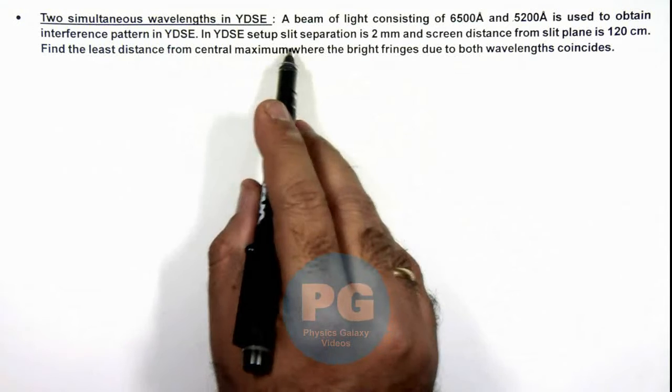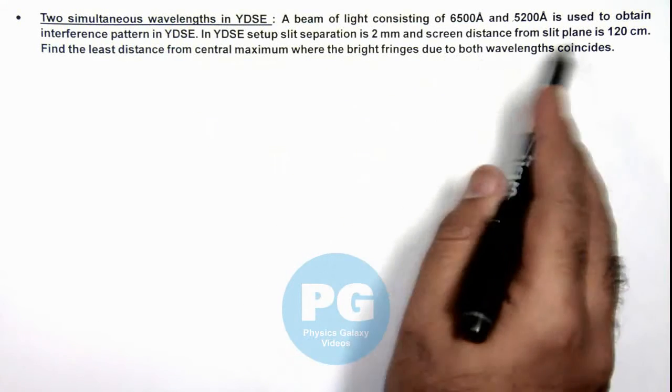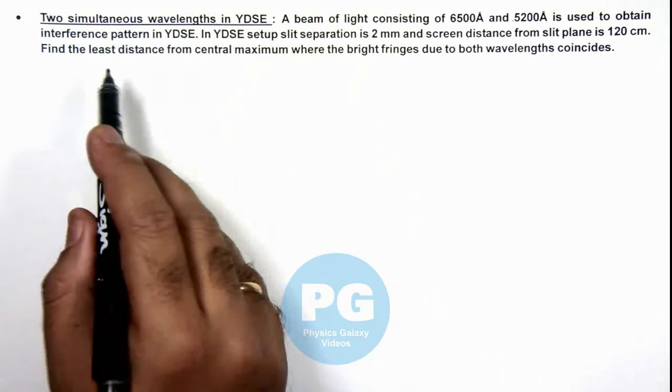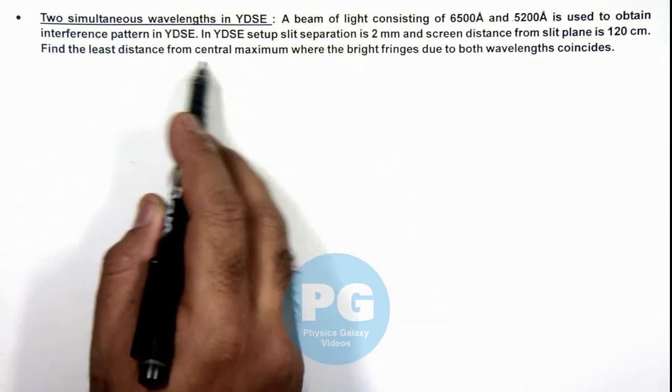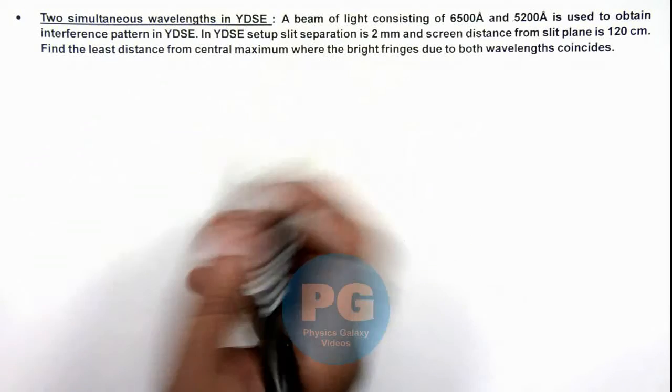And in this setup we are given with slit separation 2 meter and distance of screen from slit plane is 120 centimeter. And we are required to find the least distance from central maximum where the bright fringes due to both wavelengths coincide.